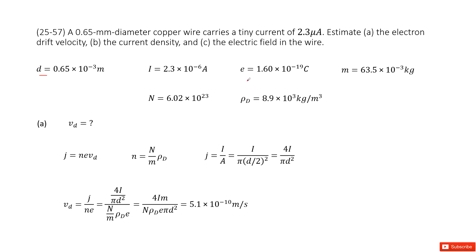Welcome to my channel. I'm Zhang Jingxu. Let's look at problem 57 in chapter 25. Chapter 25 is about electrical currents and resistance. There we have a copper wire. The diameter is given at 0.65 mm and the current is given as 2.3 microamps.